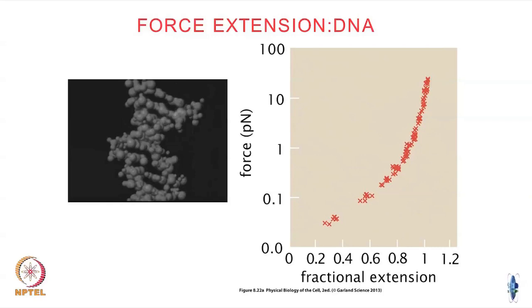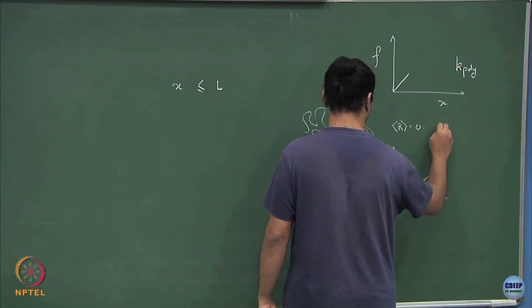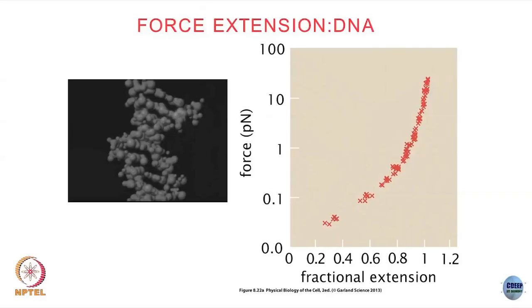Of course, as you keep pulling at some point the polymer will break, but this is how the force versus extension curve will look — the maximum possible extension being the contour length. This response depends on the particular polymer you are pulling. If you use two different DNA sequences and pull them, you will get slightly different force characteristics. So this force-extension curve is like a fingerprint of the polymer — a characteristic of the particular polymer that you are pulling.